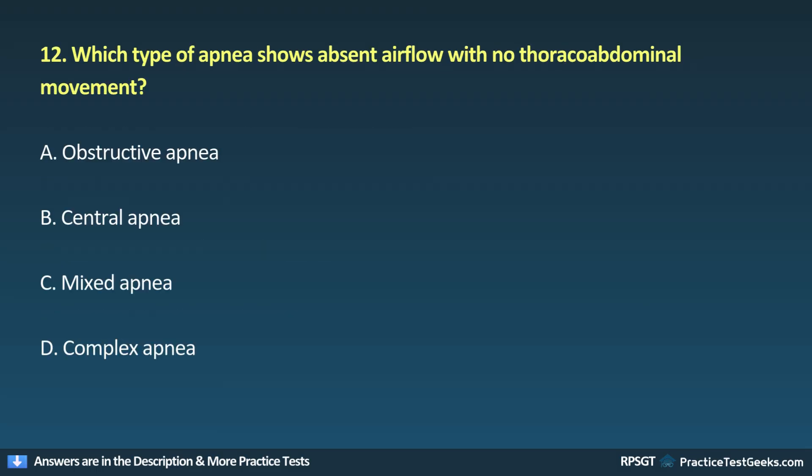Question 12: Which type of apnea shows absent airflow with no thoracic or abdominal movement? A. Obstructive apnea, B. Central apnea, C. Mixed apnea, D. Complex apnea.